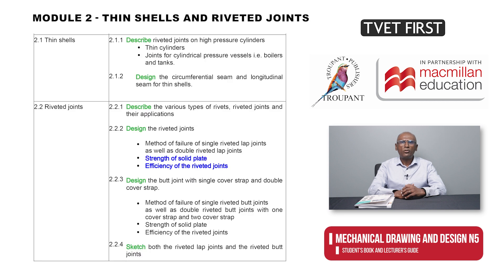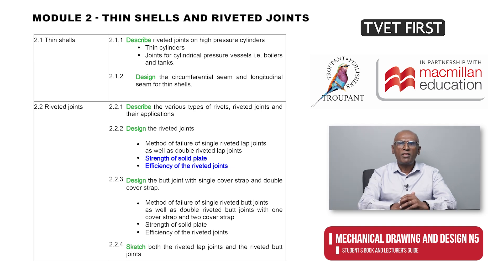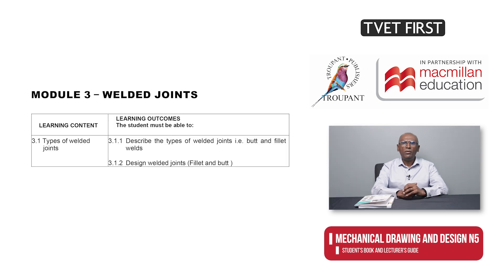Whereas the former Module 2 focused on calculations involving thin cylinders and riveted joints, the revised Module 2 mentions only descriptions, designs and sketches. Two new concepts are strength of the solid plate and efficiency of the riveted joints. The former Module 10 required calculations involving fillet welds, but the new corresponding Module 3 covers the description and design of fillet welds and butt joints.